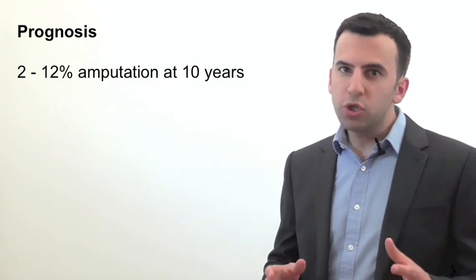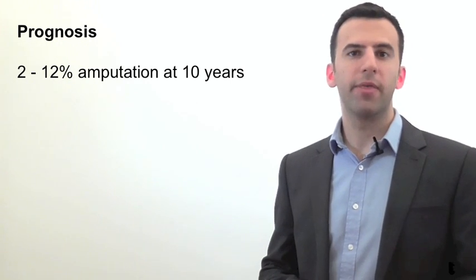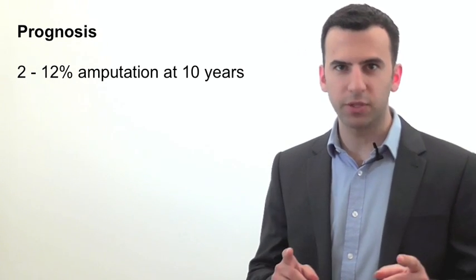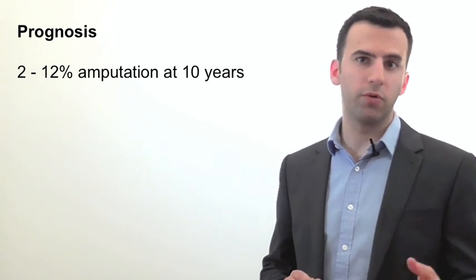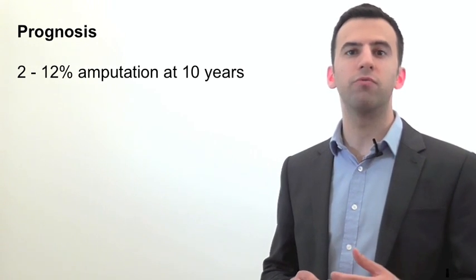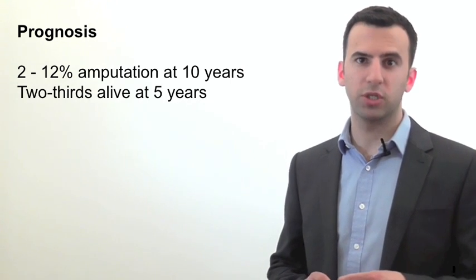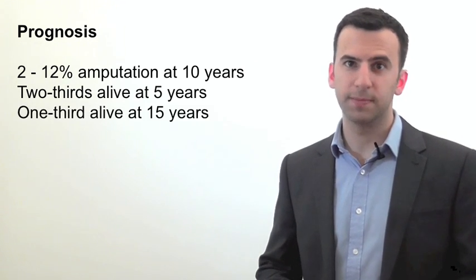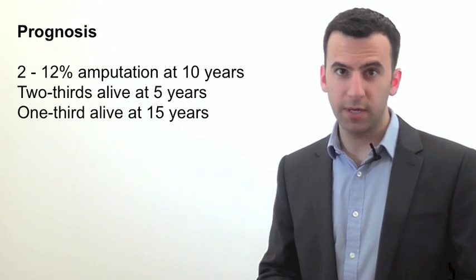Regarding the affected leg in someone with lower limb arterial disease, around 2-12% of patients may end up requiring amputation at 10 years. The most important thing a patient can do to avoid progression of their arterial disease is stopping smoking. Owing to the state of arteries elsewhere in the body, such as the coronaries, and the effects of their risk factors handling on the rest of their body, such as the smoking and diabetes, only two-thirds of patients with peripheral arterial disease may be alive after 5 years, and around one-third at 15 years. So, when you see these patients, pay close attention to their risk factors, as they need to be controlled very well indeed.